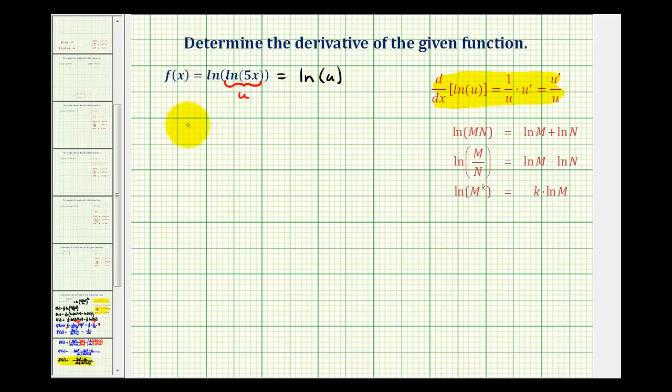So let's write this out. We have u equals natural log five x. Now we also know we're going to have to determine du dx or u prime, but to do this, notice that u is also a composite function. Since we've already used u, we could let this inner function of five x equal v, and the derivative of natural log v would be one over v times v prime.